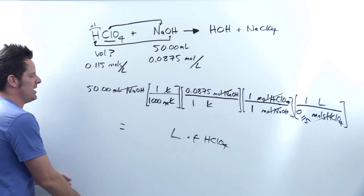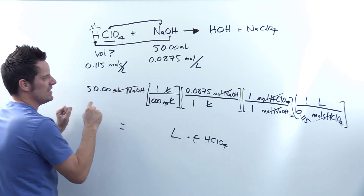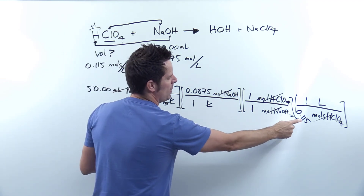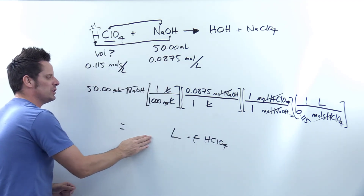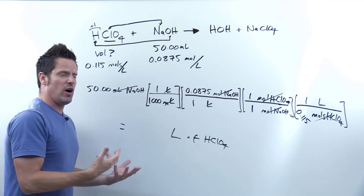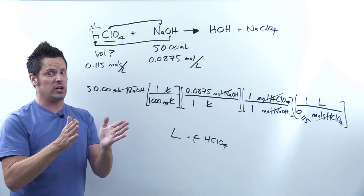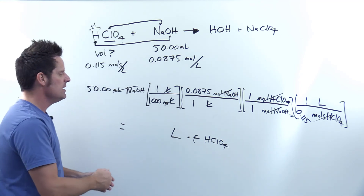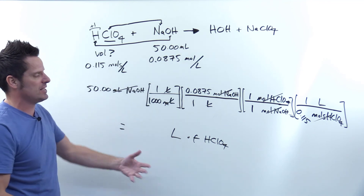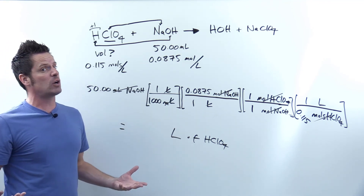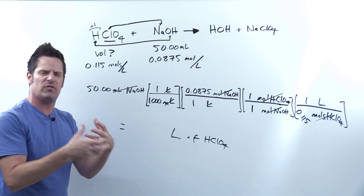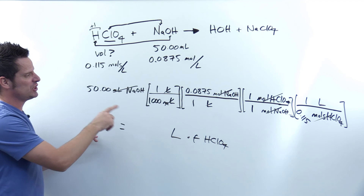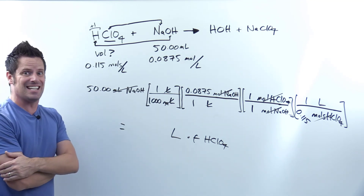The rest is just plug and chug in your calculator. Take 50, divide by 1,000, multiply by 0.0875, then divide by 0.115, and that gives you the answer in liters. The question didn't ask for specific volume units, so liters is fine — but you could convert to milliliters if you prefer. I'll let you do the calculation on your own, and that should get you to the correct answer.